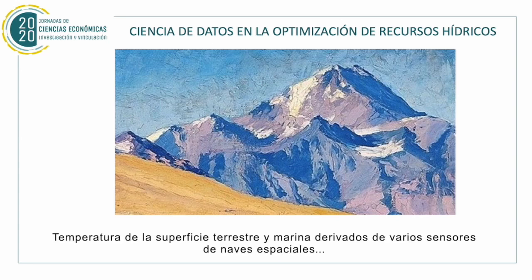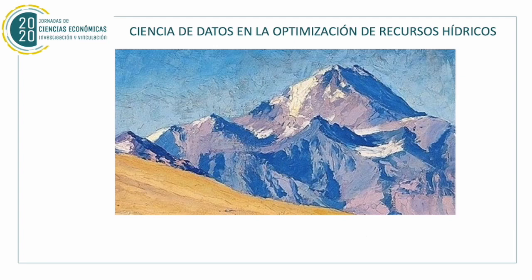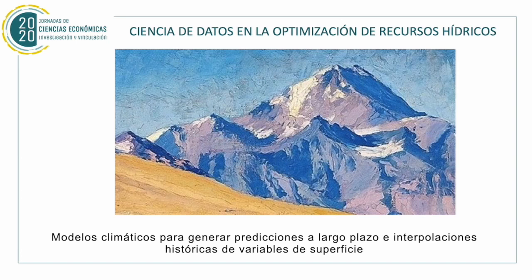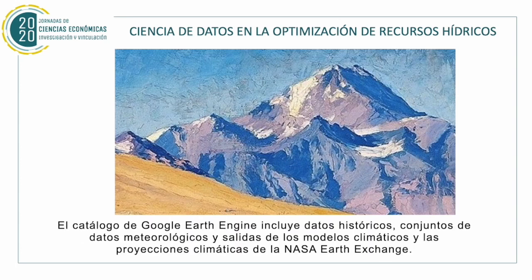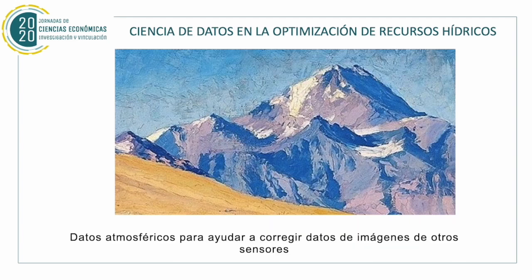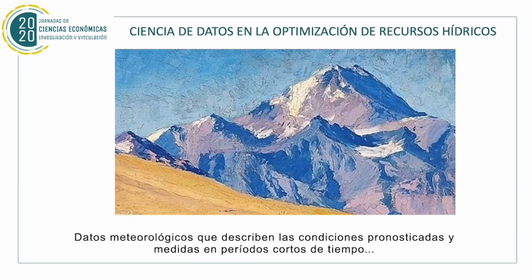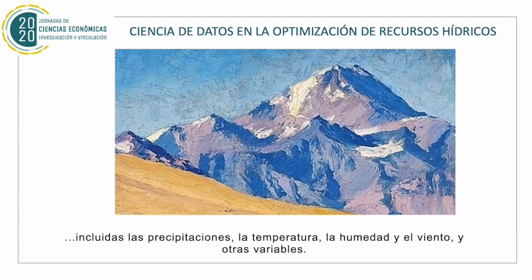The datasets currently accessible are classified as follows. Climate and weather: temperature from terrestrial and marine surfaces derived from several sensors of spacecraft, climatic models to generate long-term predictions, and historical interpolation of surface variables. The Google Earth Engine catalog includes historic data, methodological data and outputs from climatic models, climatic projections, atmospheric data to help correct images from other sensors, and methodological data describing predicted conditions — including precipitation, temperature, moisture, wind, and other variables.